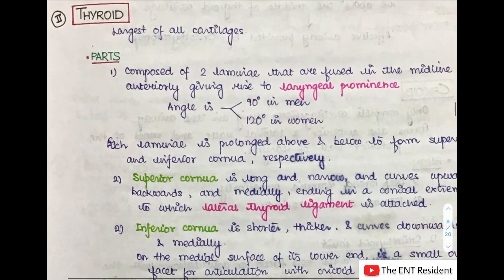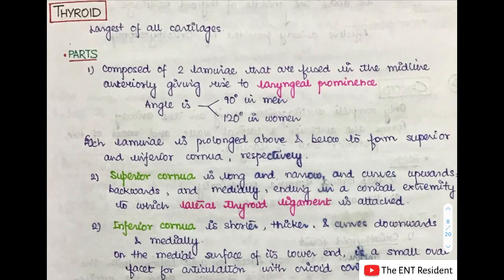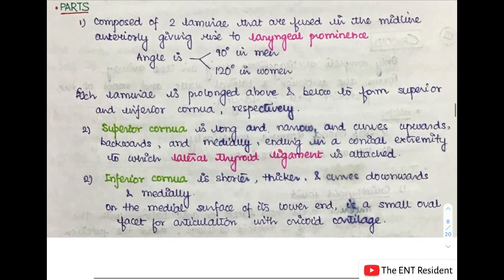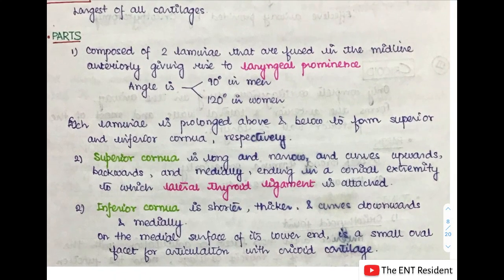Next is the thyroid cartilage, which is the largest of all the cartilages. It is composed of two laminae and two cornua. The two laminae are fused in the midline anteriorly giving rise to a laryngeal prominence. This is angled at 90 degrees in men, which is why we can see it externally as the Adam's apple; in women the angle is 120 degrees so it is not visible externally. Each lamina is prolonged above and below to form the superior and inferior cornua.